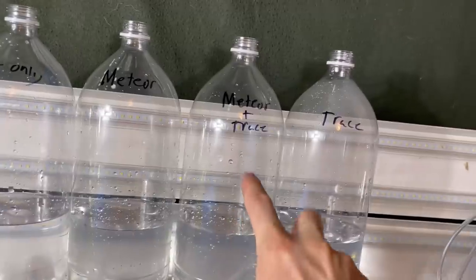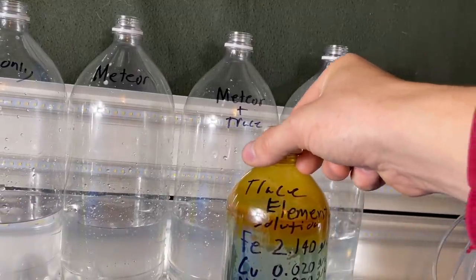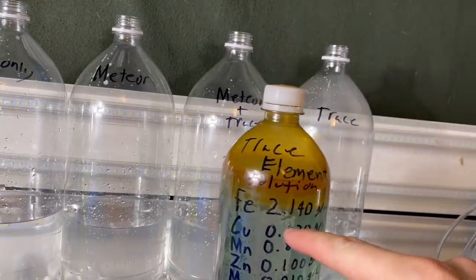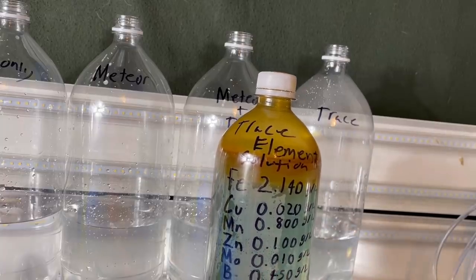Now these two bottles over here, you see I've got trace written on them. I'm going to add a little bit of the trace element solution. So this has got the correct proportions of iron, copper, manganese, zinc, molybdenum, etc.